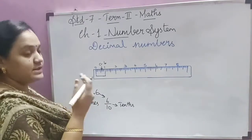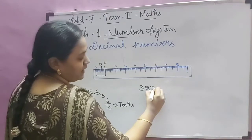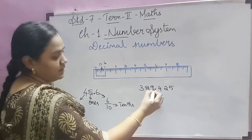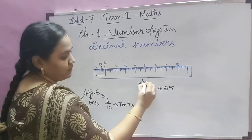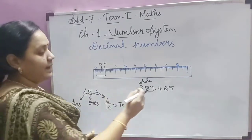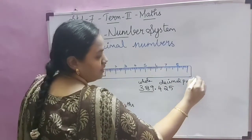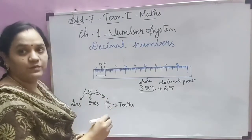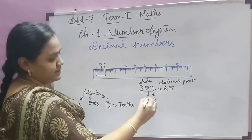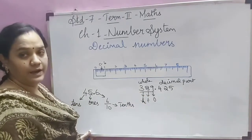Let us see the place value for decimal numbers using another example: 389.425. Numbers before the decimal point are called the whole number part, and numbers after the decimal point are called the decimal part. The place value of 9 is ones, 8 is tens, and 3 is hundreds.